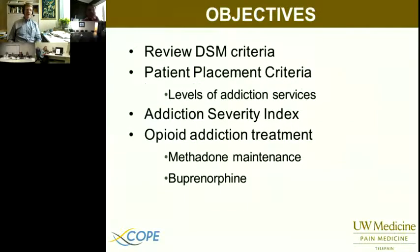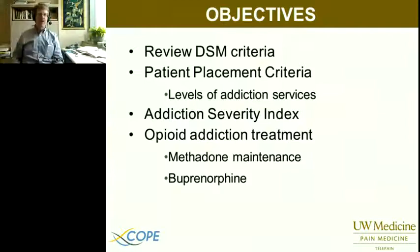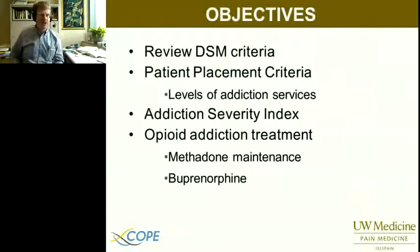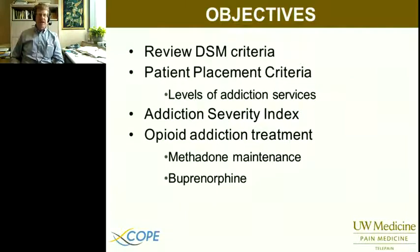So today we're going to review briefly DSM-5 criteria for substance use disorder. I'm going to try and give you a sense of what it's like in the addiction treatment world in trying to determine what kinds of services people might need — the patient placement criteria — just to give an idea of what addiction treatment looks like and what kinds of considerations go into making a decision about where people should get treatment. The addiction severity index is a helpful measure, not that you're going to use it in primary care, but to understand some of the dimensions of addiction. And then specifically, just because it comes up so often, opiate addiction treatment with methadone and buprenorphine.